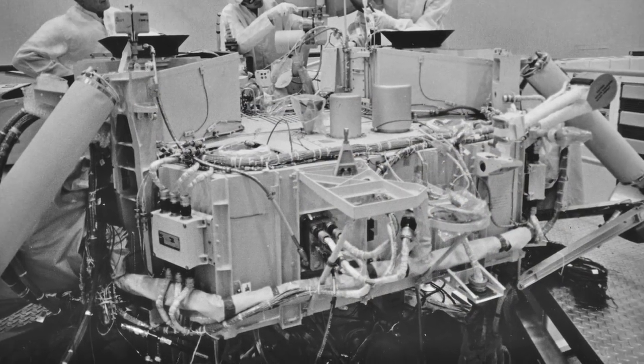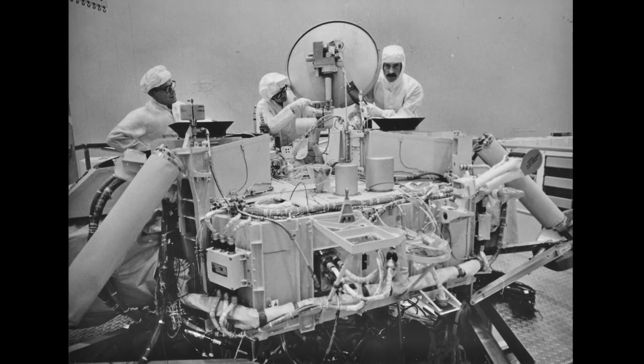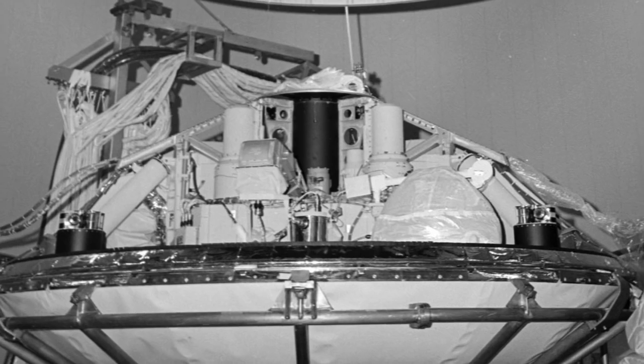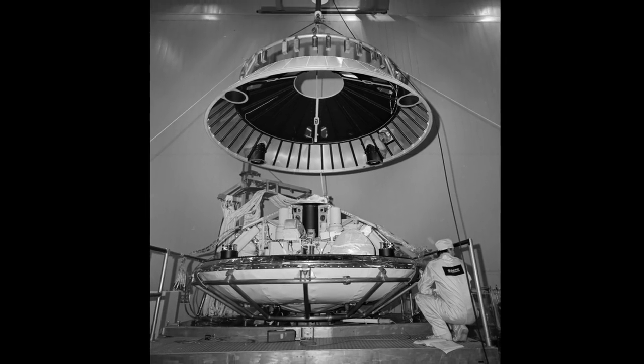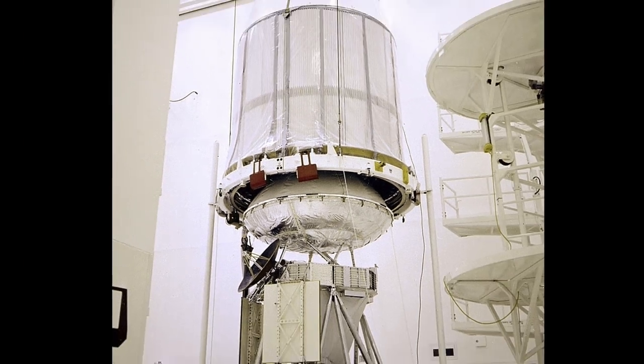In 1975, the United States launched two unmanned spacecraft toward Mars in a ground-breaking project named Viking. Each spacecraft consisted of a lander and an orbiter.